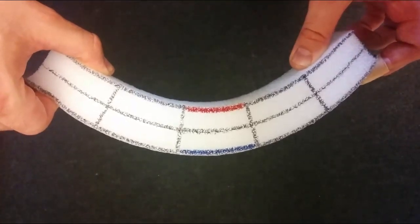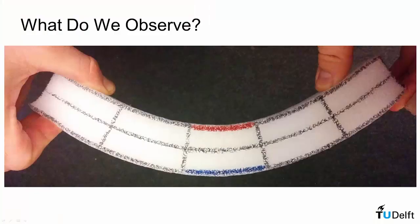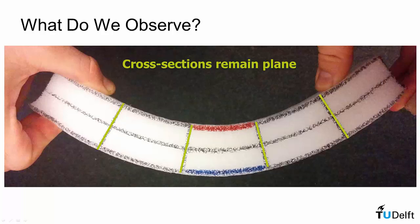If we pause a frame out of it and look at that, we can make some observations about the deformation we see. The first observation we can make is that these straight lines that align with the cross-section, although they rotate during the deformation, they remain straight. So we say cross-sections remain planar.